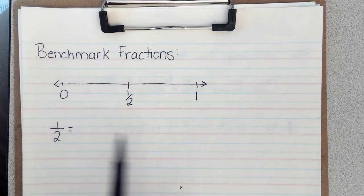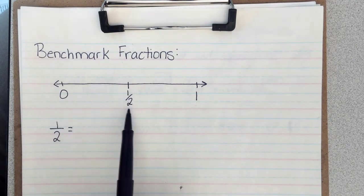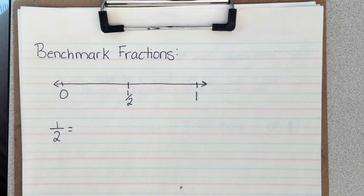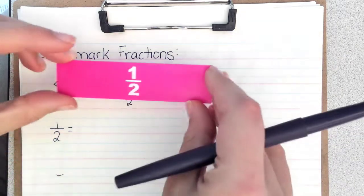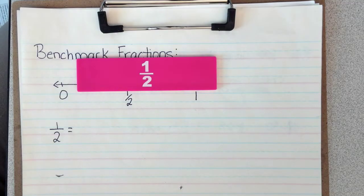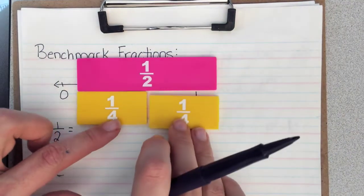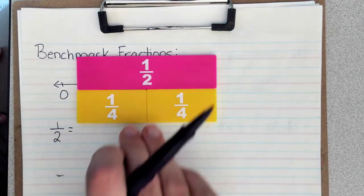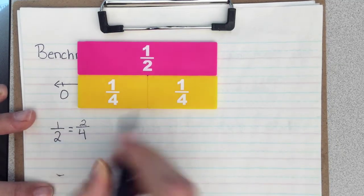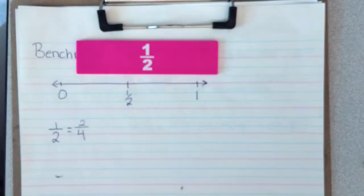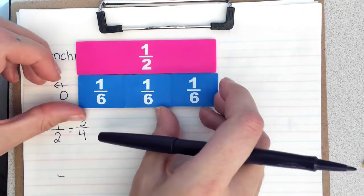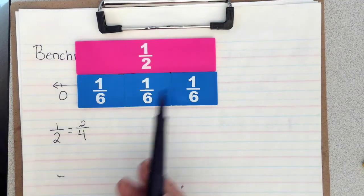So thinking about numbers that are going to be around 1 half — what are numbers that are equivalent to 1 half? If we take a break from our number line and think about our fraction bars: 1 half. 2 fourths are going to be equivalent to 1 half, so that is going to be the same size. 2 fourths. Another fraction that would be equivalent is 3 sixths — same size.